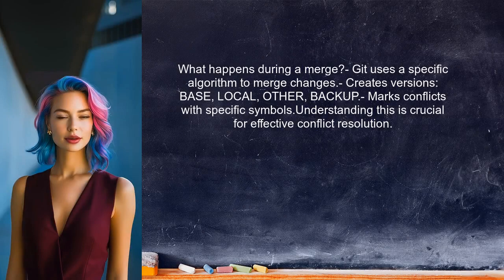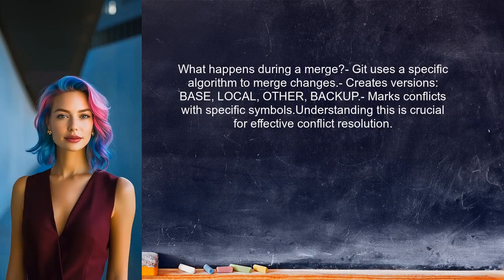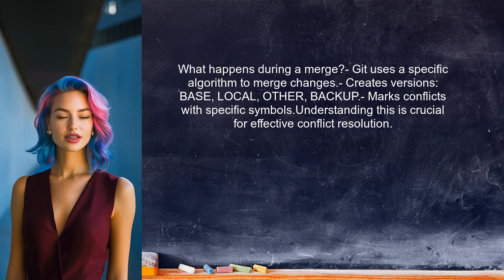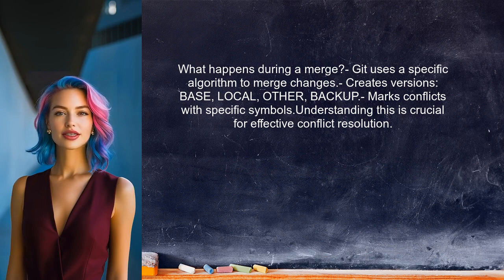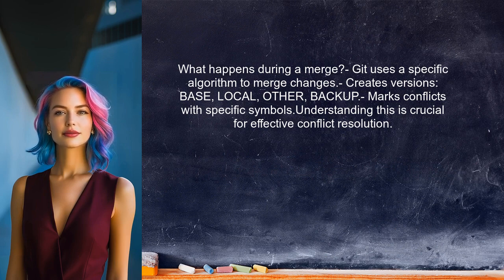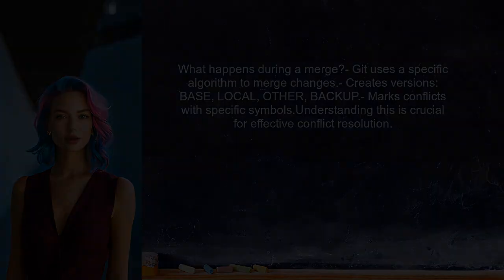So what exactly happens during a merge? When you issue a Git merge command, Git uses a specific algorithm to automatically merge changes. It creates several versions of the file, including base, local, other, and backup. If conflicts arise, Git marks them using specific symbols. Understanding this process is crucial for effective conflict resolution.